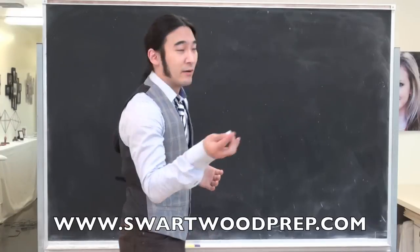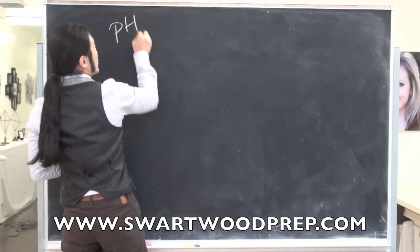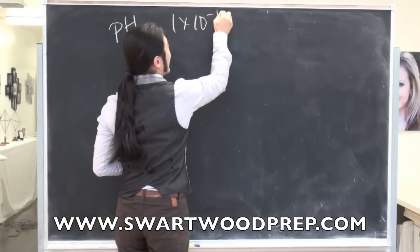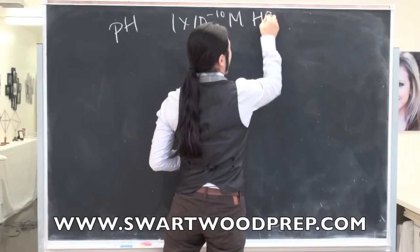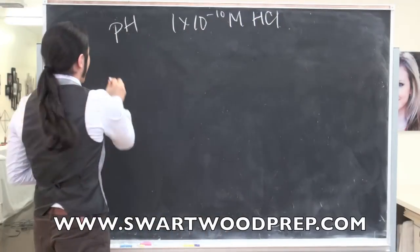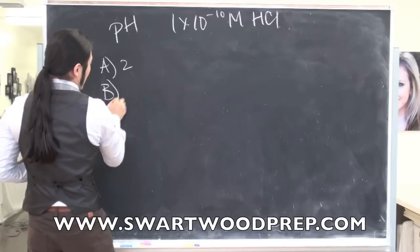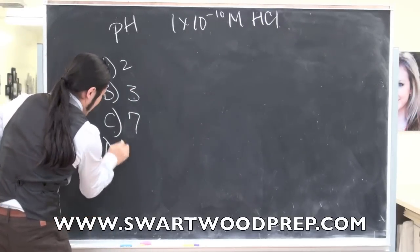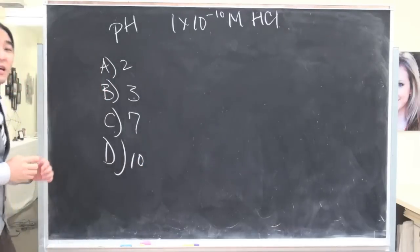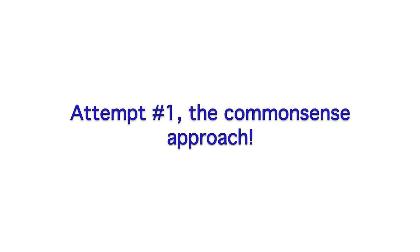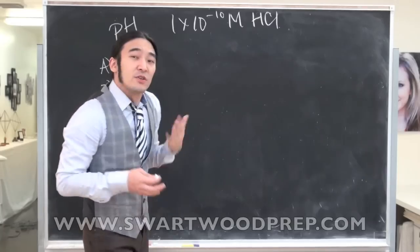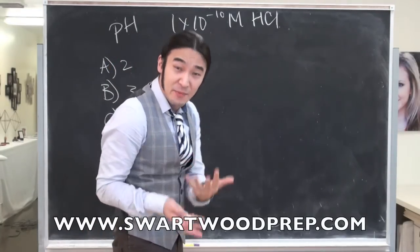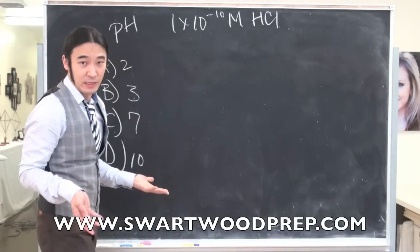So now let's try this problem. So now I want to know what's the pH of a 1 times 10 to negative 10 molar HCl solution. And the answer choices are going to be something like 2, 3, 7, and 10. This is a good example of what I mean by using common sense instead of just purely computing.